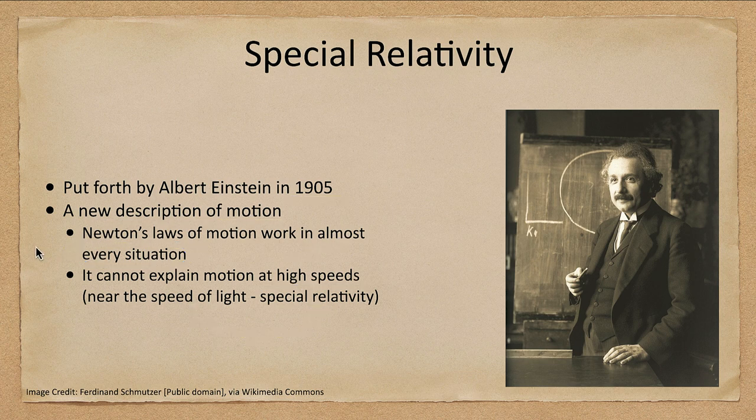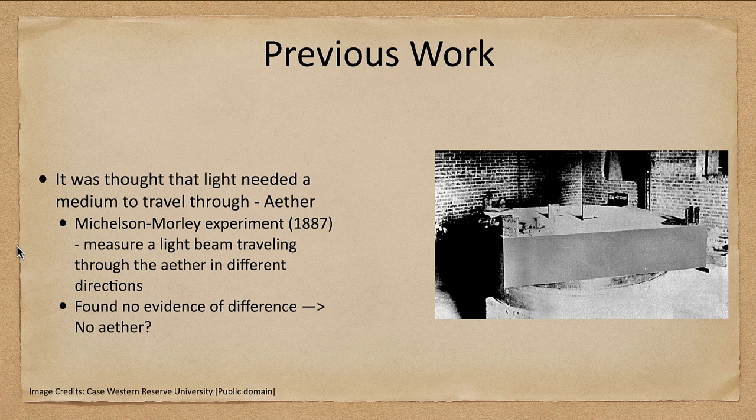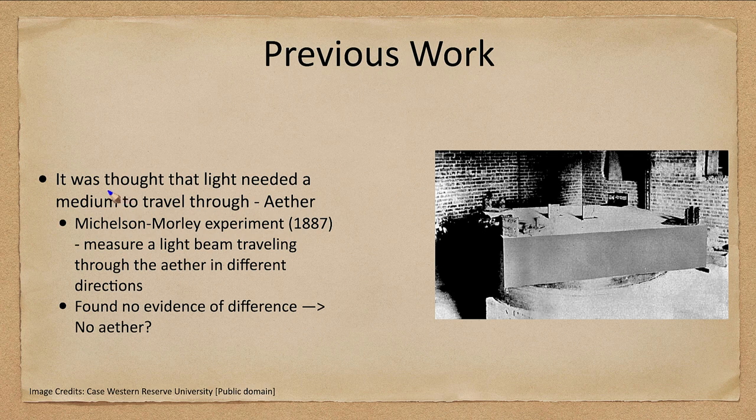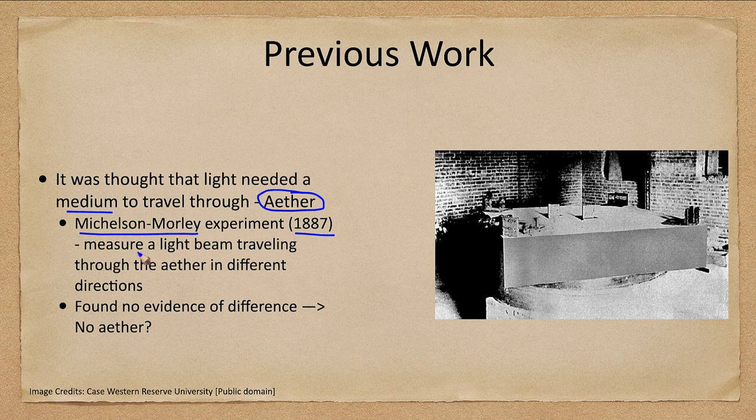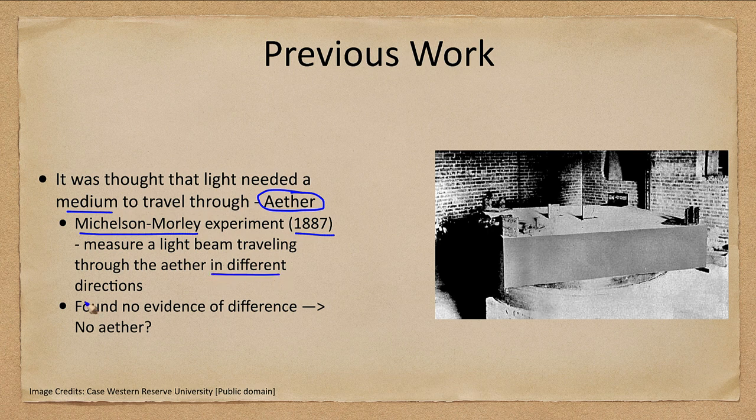So what led to this theory? Back in the 1800s, it was believed that light needed a medium through which to travel, called the ether. In 1887, Michelson and Morley conducted an experiment to measure a light beam traveling through the ether in different directions to see how its speed was affected.